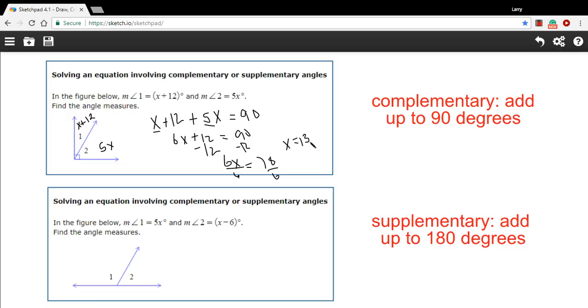We're not done, though, because they don't want x as an answer. They want the angle measures. So we have to go back to the measures for angle 1 and 2. So the measure for angle 1 is x plus 12. Well, 13 plus 12 would be 25. So the measure of angle 1 is 25 degrees. And measure of angle 2 is 5 times x. So 5 times 13 is 65. So that is 65 degrees. Now, if we did this right, they should add up to 90 degrees. And yes, they do. All right.